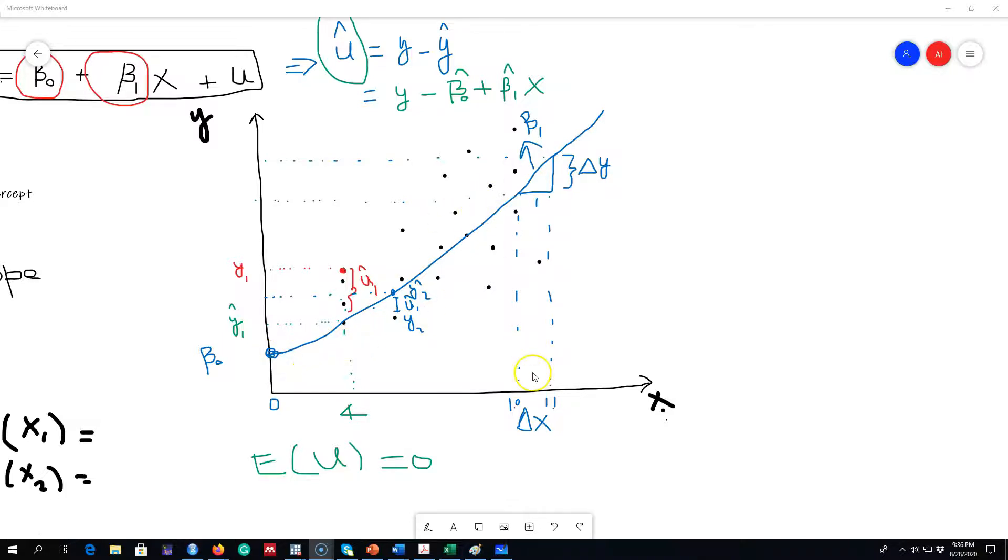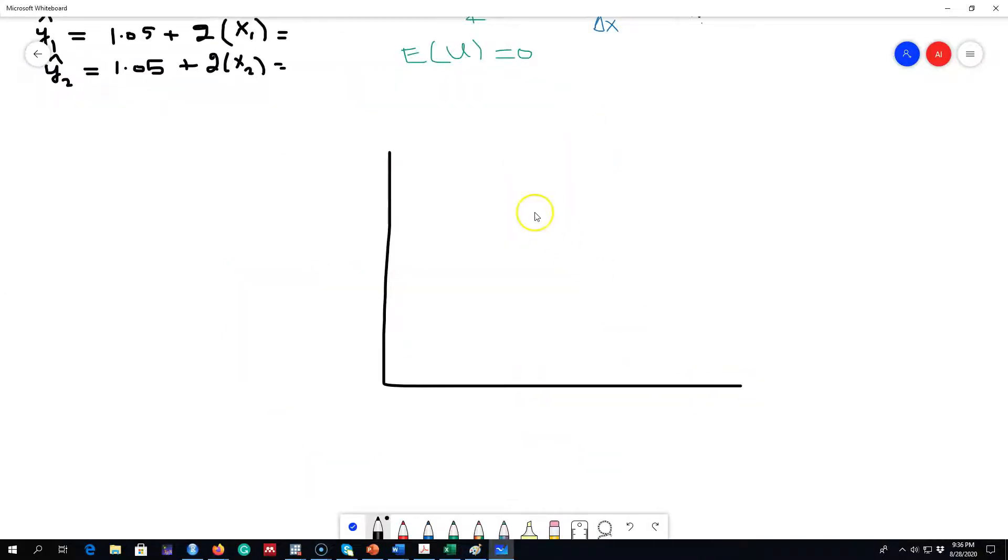We wanted to explore this beta 1 parameter and to explore this relationship we draw this line. Now the question is how to draw this line. You may have different data points, they may be scattered like this, so you can essentially draw different lines in between these data points.